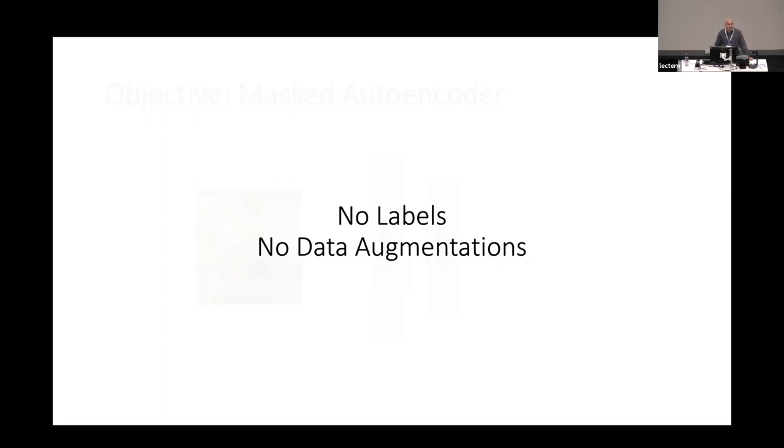Data augmentations are considered part of self-supervised learning, but I'd argue they're inevitably cheating. For example, saying 'color change doesn't matter' is actually injecting task knowledge — that for recognition, color is not important. Typically people try data augmentation one, two, three, four, see which gives better results, and select that. In my view, this is bringing in supervision by the backdoor. In masked autoencoders, there's none of that because we're working at the raw image level.